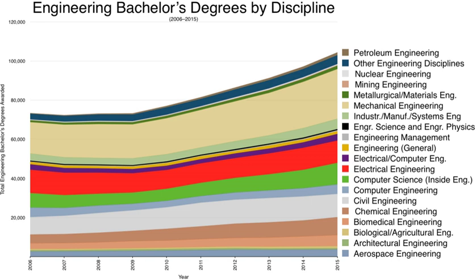There are also graduate degree options for engineers. Many engineers decide to complete a master's degree in engineering or business administration, or get education in law, medicine, or other fields. Two types of doctorate are available: the traditional PhD and the Doctor of Engineering. The PhD focuses on research and academic excellence, whereas the Doctor of Engineering focuses on practical engineering. The education requirements are the same for both degrees; however, the dissertation required is different — the PhD requires a standard research problem, while the Doctor of Engineering requires a practical dissertation.